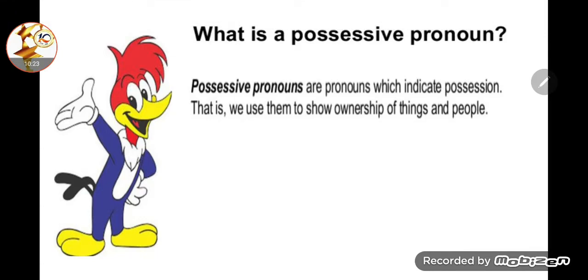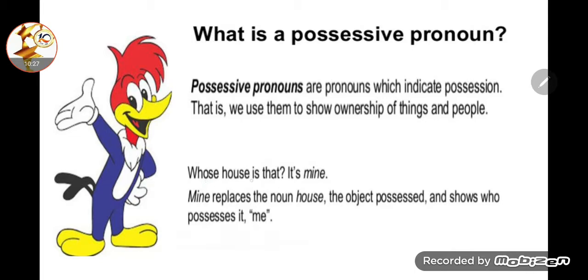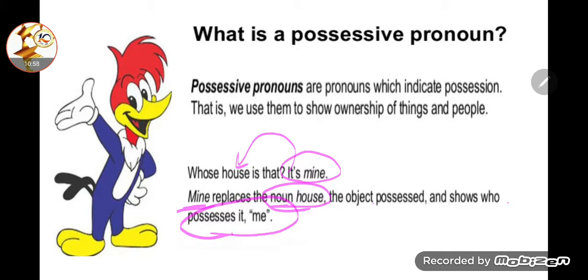If someone asks 'Whose house is that?' you can say 'It's mine,' using a subject pronoun instead of repeating the noun, or you can say 'The house is mine' or 'This house is mine.' Here, 'mine' replaces the noun 'house.' The object possessed is shown and it shows who possesses it — me. So from 'I': the possessive adjective is 'my' and the possessive pronoun is 'mine.'